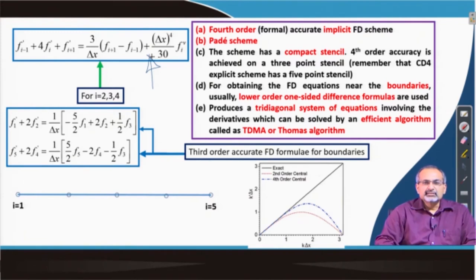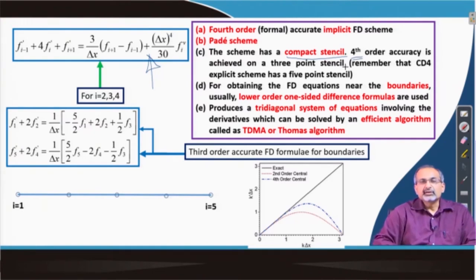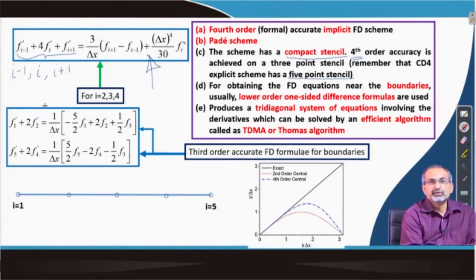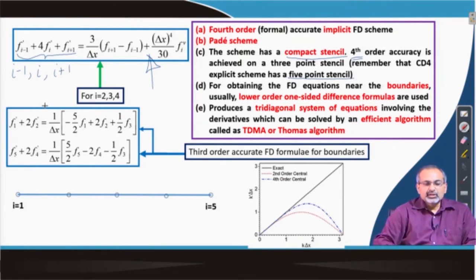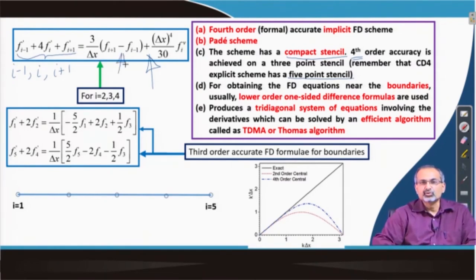As mentioned earlier, in the literature these schemes are often called Padé schemes. They have a compact stencil in the sense that to obtain fourth-order accuracy with the CD4 scheme we needed a 5-point stencil, while this scheme uses only a 3-point stencil, using grid points i-minus-1, i, and i-plus-1 to define the derivatives on the left-hand side. The functional values are also used from that stencil, specifically from the two points i-plus-1 and i-minus-1.